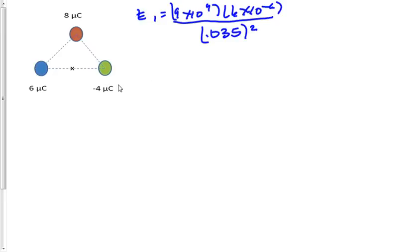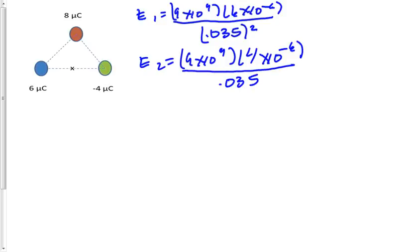Electric field 2 will be what's caused by the negative 4 microcoulomb charge. So electric field 2 is equal to 9 times 10 to the 9th. And notice this time I will keep it as a positive 4 times 10 to the minus 6. We will discern direction in negatives and positives later, divide this by 0.035 squared.